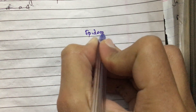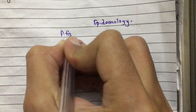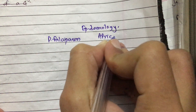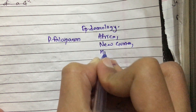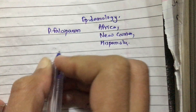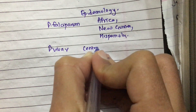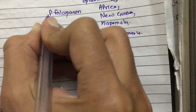Now let us talk about the epidemiology of malaria. Plasmodium falciparum is primarily found in Africa, New Guinea, and Hispaniola. Plasmodium vivax mostly occurs in Central and South America.